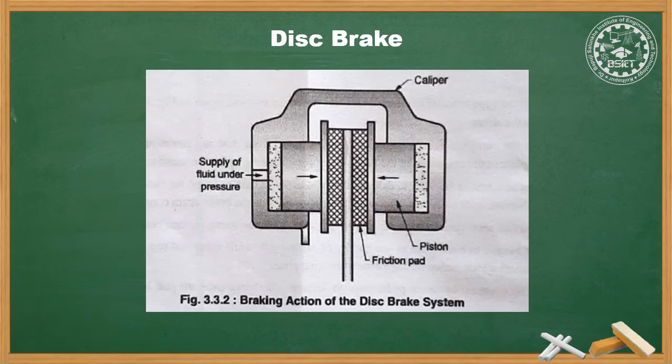The shoes exert pressure on the disc like squeezing a piece of paper between your thumb and first finger as you pick it up. The friction between the pads and the revolving disc then provides braking action, reducing wheel speed. The disc brake is of single piston caliper or double piston caliper type. The master cylinder is located in the handlebar of a two-wheeler. Disc brake is not self-energizing like the drum brake, so more force is needed to apply it.